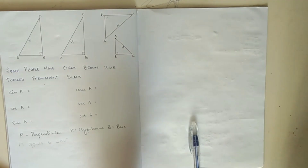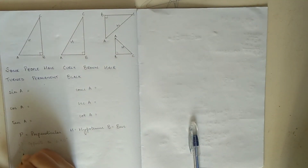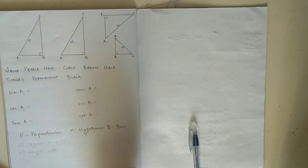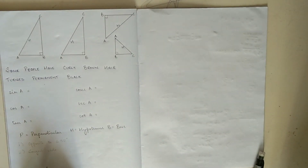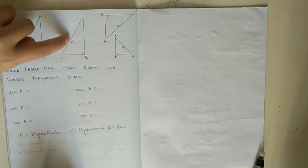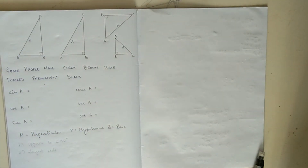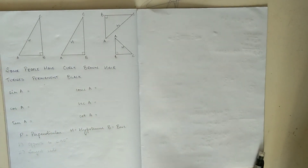Another definition of hypotenuse is that it will be the longest side of the right angle triangle. There is a reason why it's the longest side, but I'm not going to go into depth with that one.